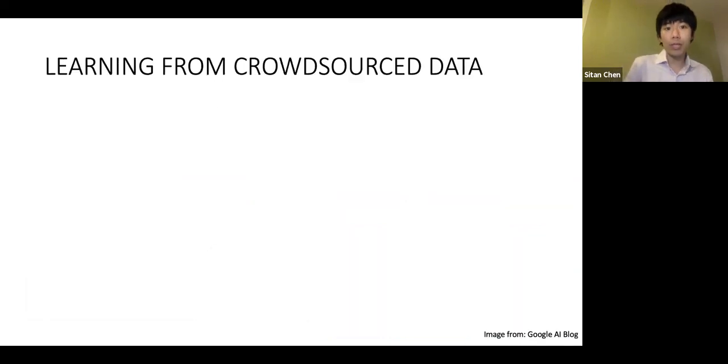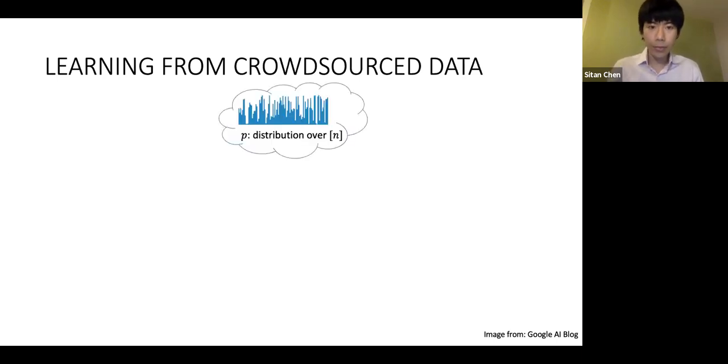The particular problem we'll consider arises in settings where the learner has access to data obtained in a crowdsourced fashion. Imagine you're a centralized server that wants to train some spell check over mobile devices, and your goal is to learn the underlying distribution over misspellings of a particular word. I'll denote that distribution, a discrete distribution over some finite domain of size n, by p.